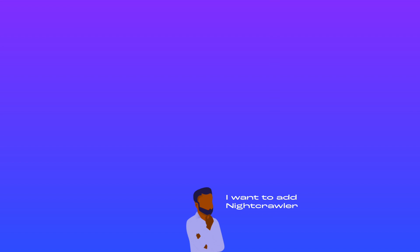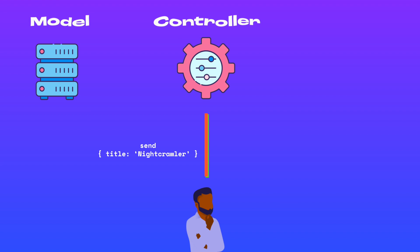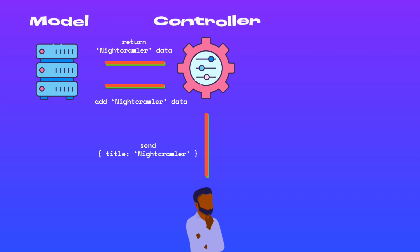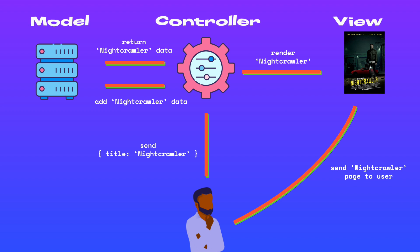Another example could be where a user wants to add a new movie. When the user clicks on the add button, the view is going to send that information over to the controller saying that the user wants to add a new movie. The controller now knows that it needs to take the user's input and send it over to the model so the model can add that information into the database. Once the model adds that new information, it will send it back over to the controller so it can send it back over to the view component, which will allow the user to see that their movies have been added to the database. So through these examples, we can see how the controller is a bridge between our models and our views.